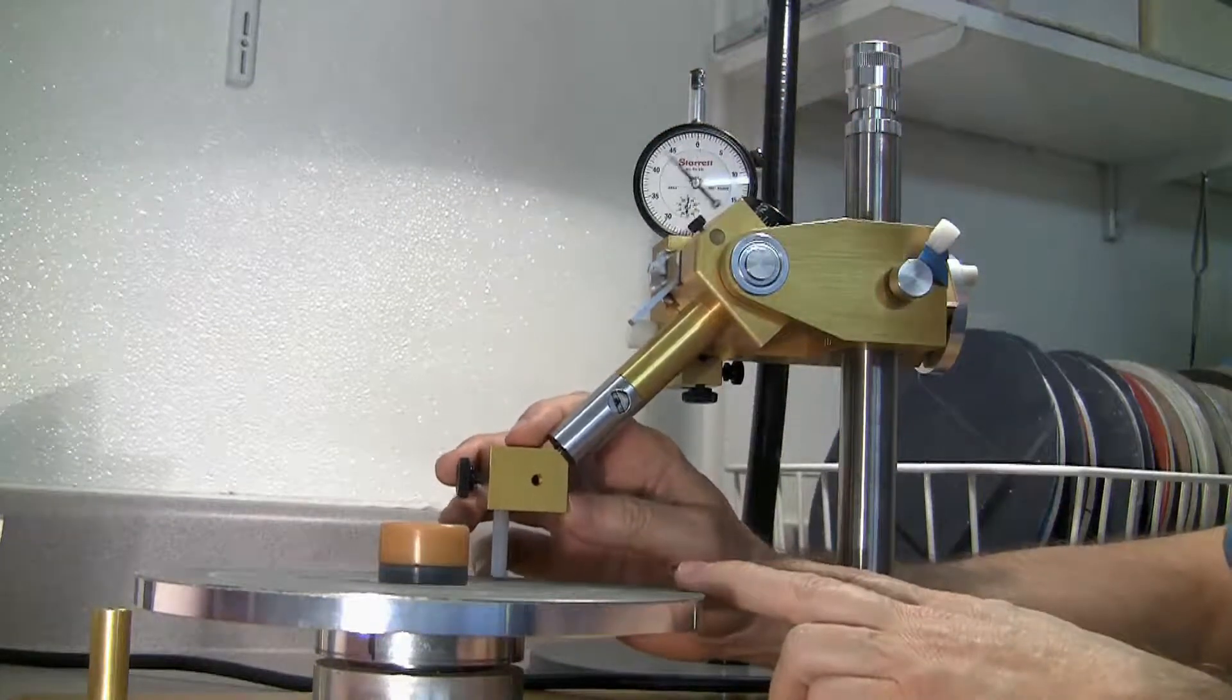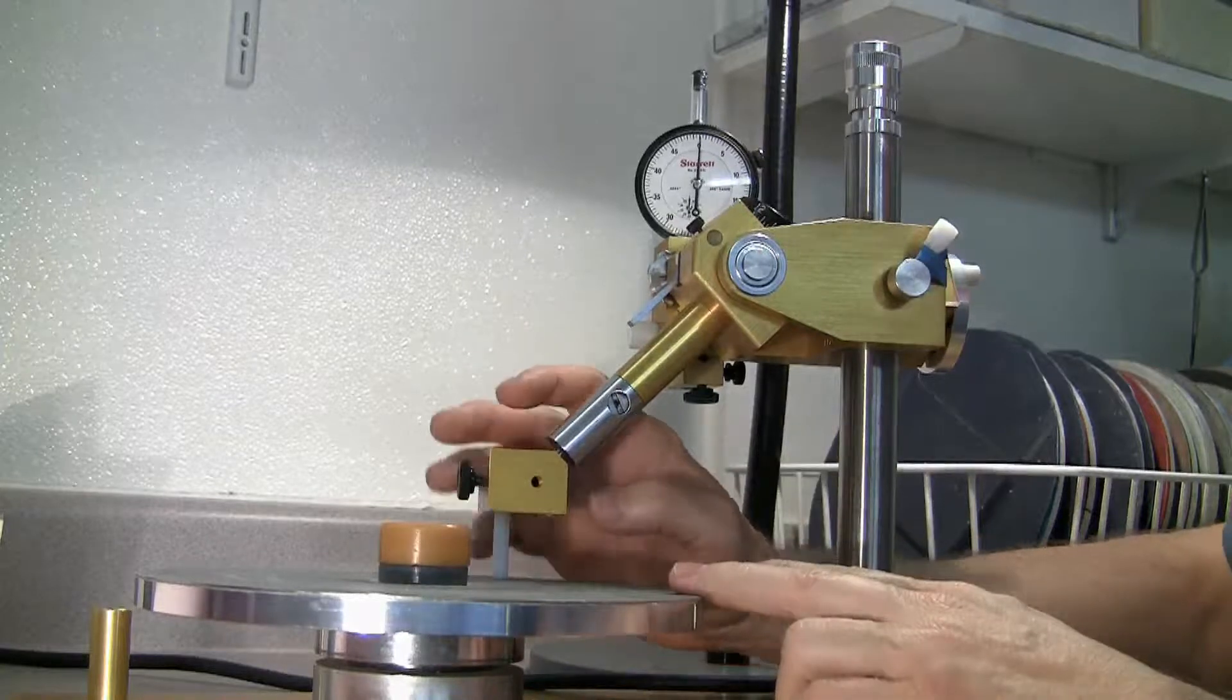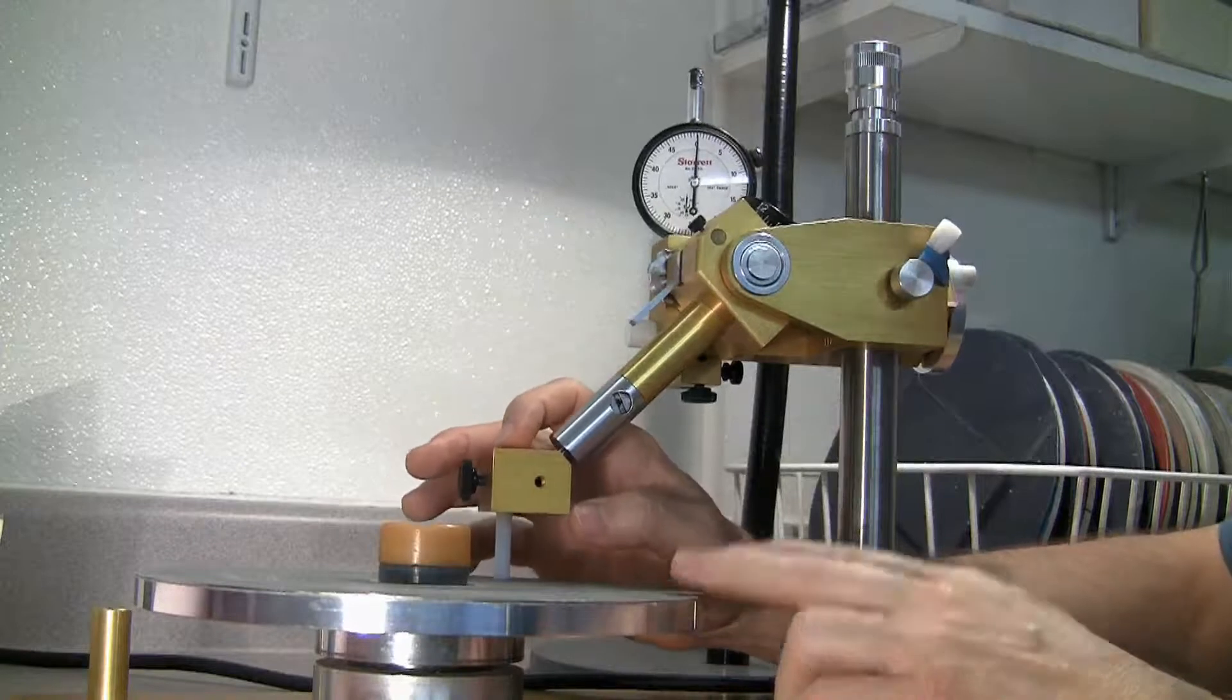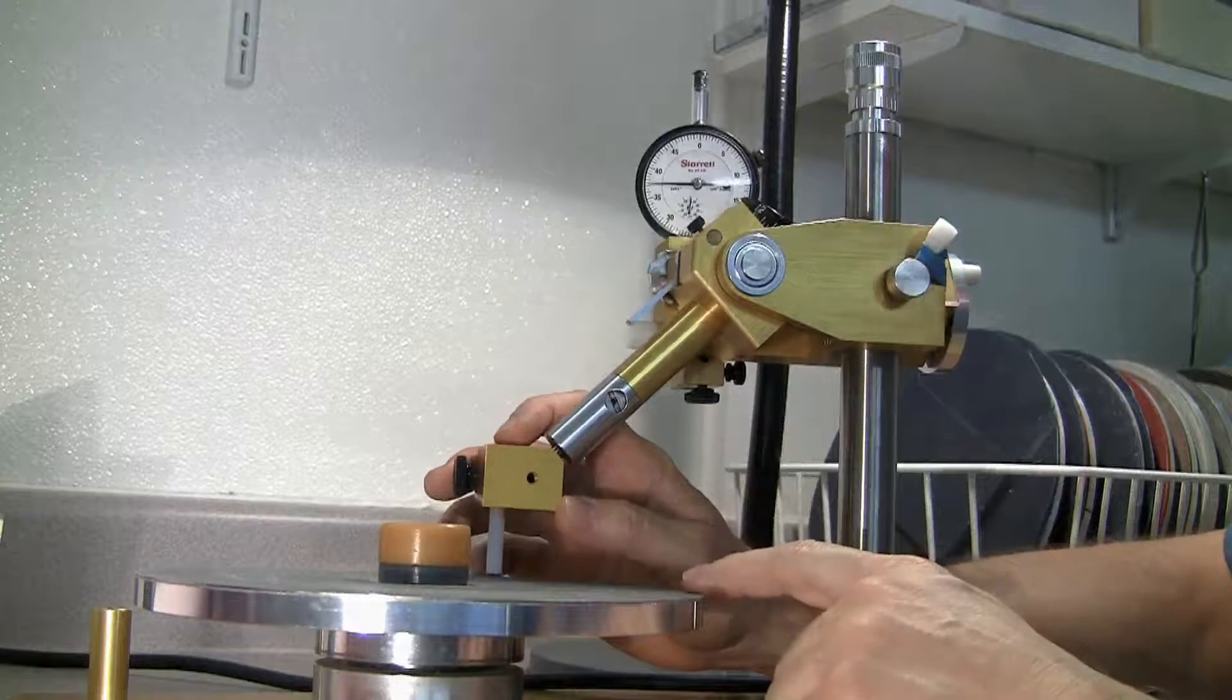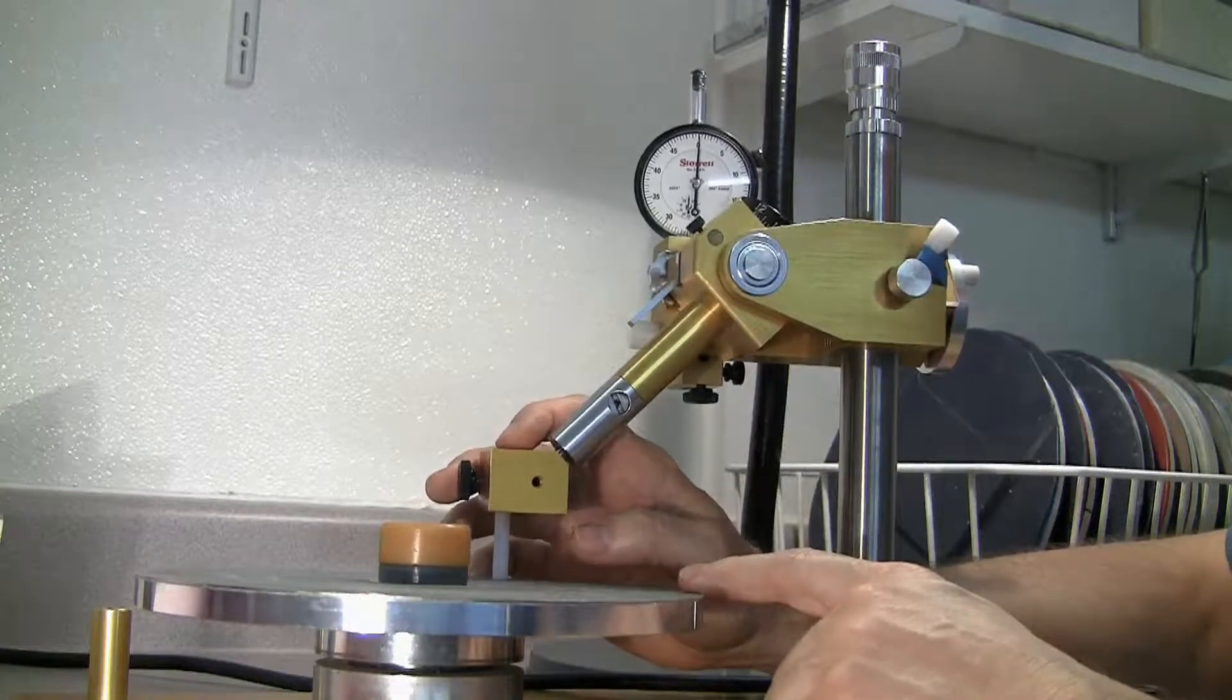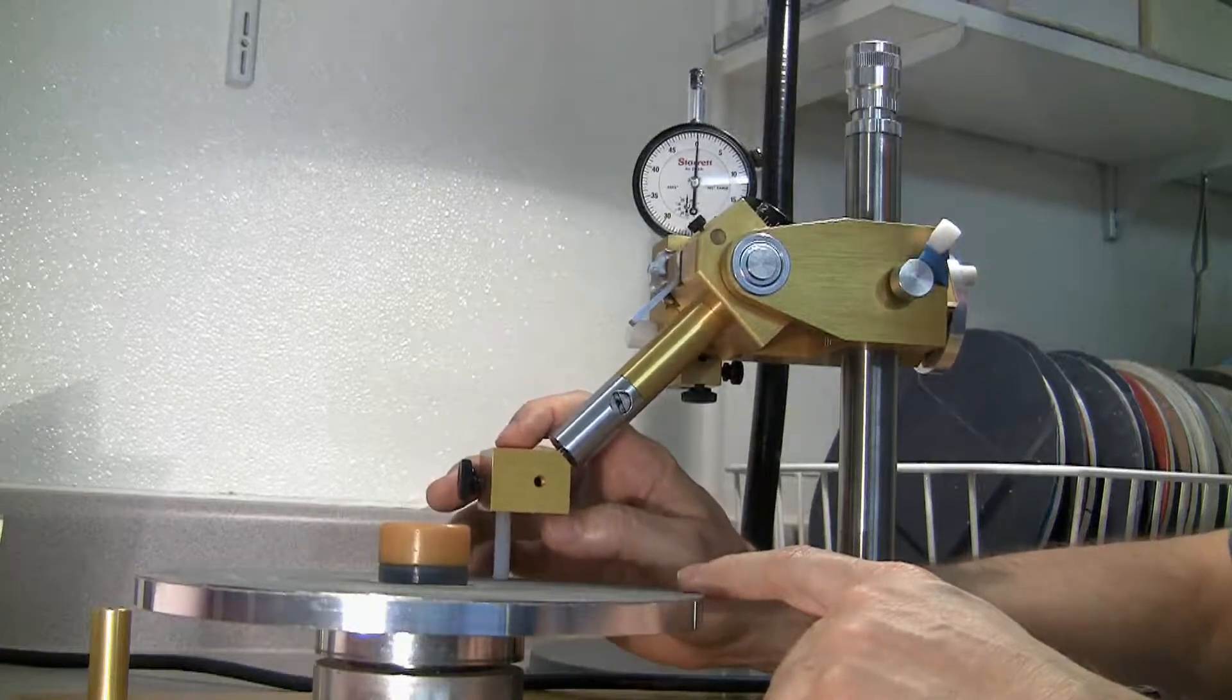Additional time in contact with the lap will cause the lap to continue cutting the facet. And minute variations in pressure on top of the stone can also press the stone a little bit further into the lap. And at the sizes that we're talking about, the depths of cut we're talking about in faceting, that's enough to blow up your meets. So we have to have some way of knowing how to control our depth of cut.